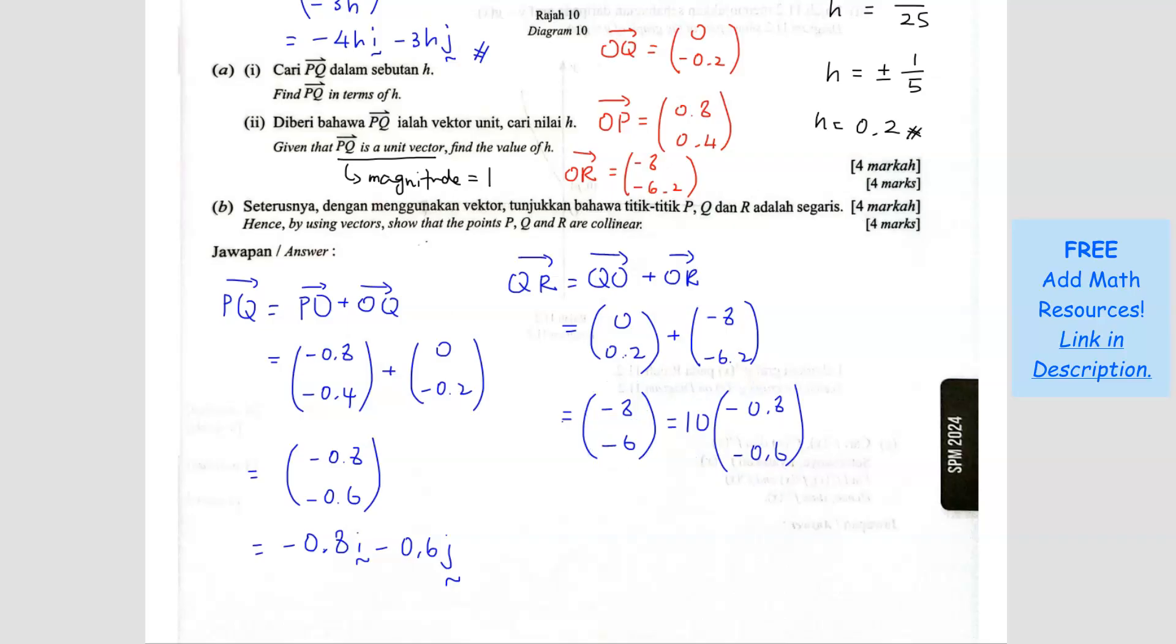So I actually factorize 10 out. So when I factorize 10 out, it becomes 10 times negative 0.8i minus 0.6j. So it's actually the same vector already. Can you see that? It's already the same vector. So that's what we are trying to do. So now QR equals to 10 times of this. This is the same as this. They are the same. So that means this is actually PQ. So 10 PQ. This is ideally what you want to form. You want to show that there's a relationship here between this. And that means they have the same vector.